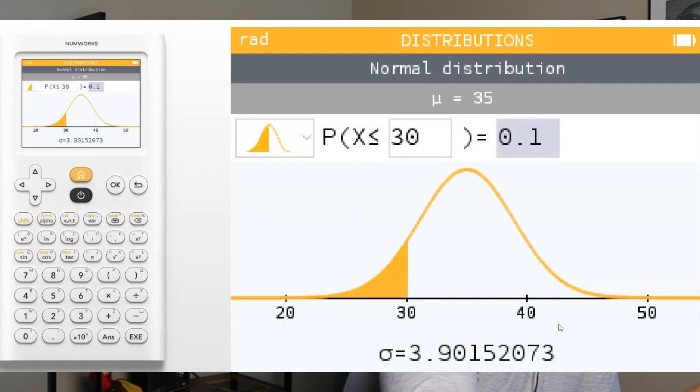It not only creates the picture that shows you 10% below 30, but at the bottom of the screen, it gives you that standard deviation of 3.902. How awesome is that? And this is a very common AP statistics question where they ask you to find the mean or standard deviation, and they give you a particular known value, and you might know a percentage above it or a percentage below it.